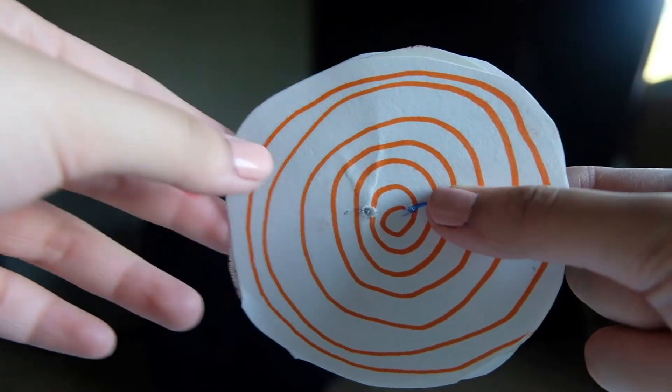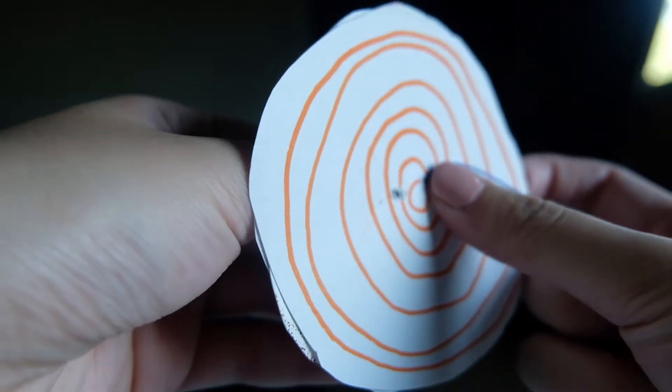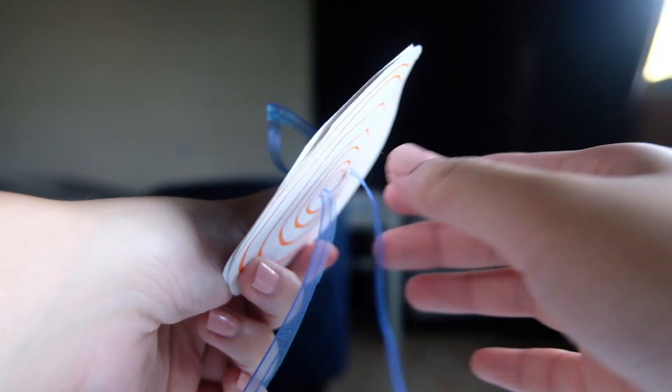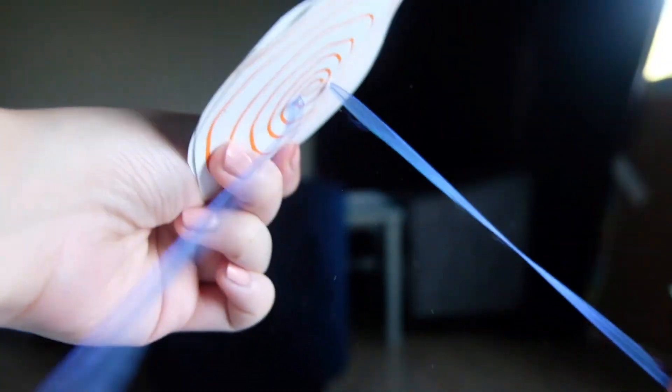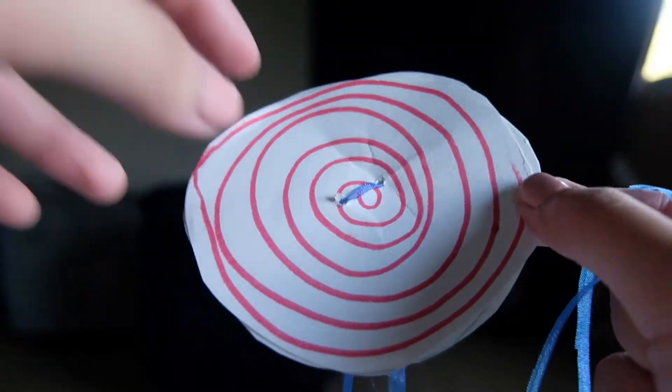Now grab your string and put it through one of the holes. Using the same string, you want to loop it through the other hole as well. Keep pulling the string until both sides of it are the same length.